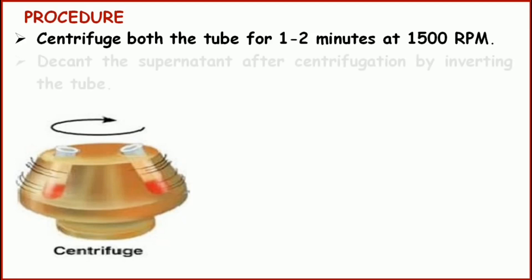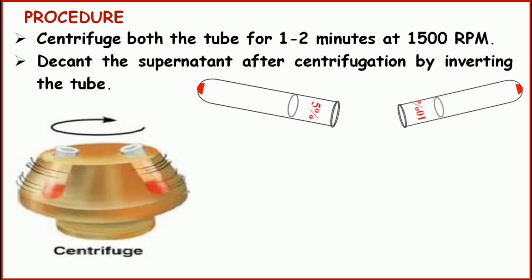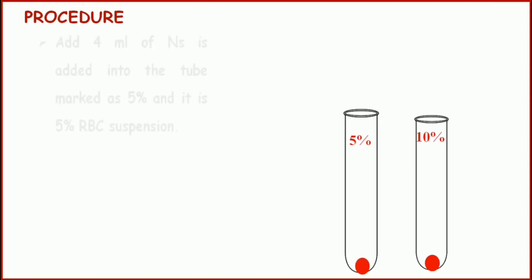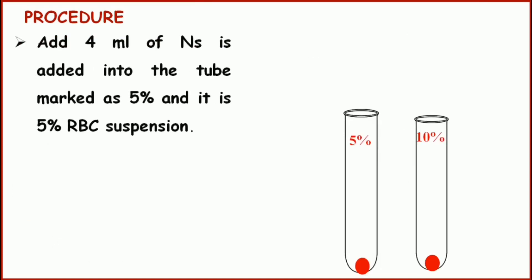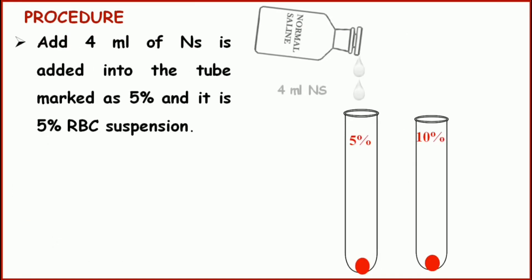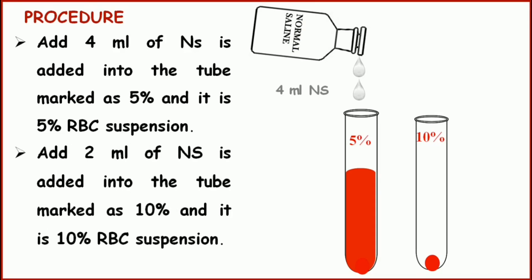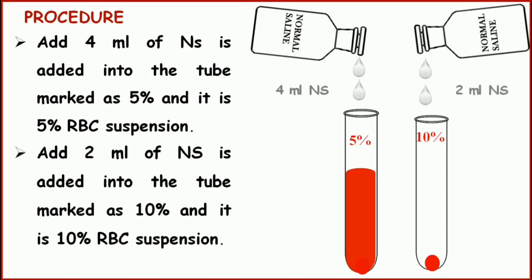Pour out the supernatant after centrifugation by inverting the test tube. Add 4 ml of normal saline into the tube marked as 5% — this will be the 5% red cell suspension. Then add 2 ml of normal saline into the tube marked as 10% — this will make the 10% red cell suspension. So now your 5% and 10% red cell suspensions are ready.